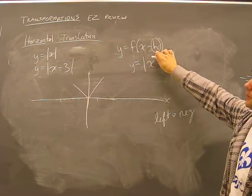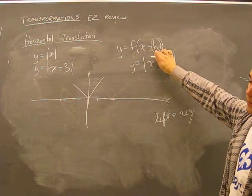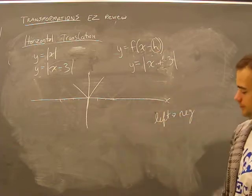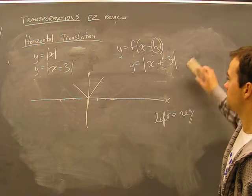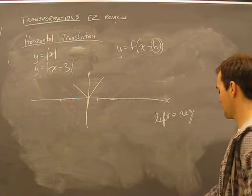If you move to the left, h is a negative number. If you move to the right, h is a positive number.